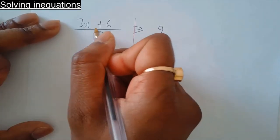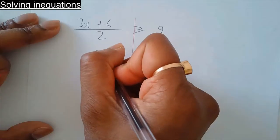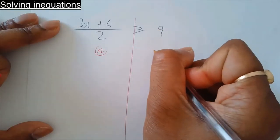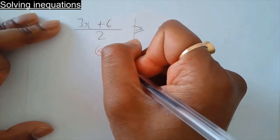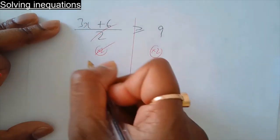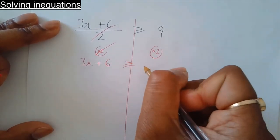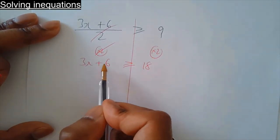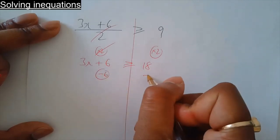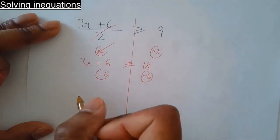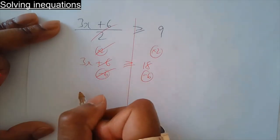First of all, get rid of the divide by 2 by multiplying by 2 — same on the other side. Divide by 2 is cancelled by times by 2, so you're just left with the numerator. 9 times 2 is 18. Get rid of plus 6 — do the same on the other side. 6 take away 6 cancel, so you're left with 3x.